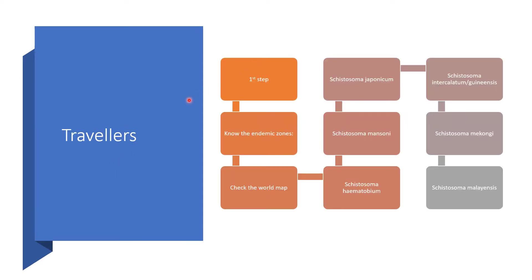Total and true prevention will start by having geographical knowledge of where we can find schistosomiasis. In other words, the epidemiology of schistosomiasis will guide us a lot. For travelers moving from the western world — the non-endemic zones — going to any part of the endemic zones, the first step is you should know the endemic zones. So check your world map right now if you are about to travel.